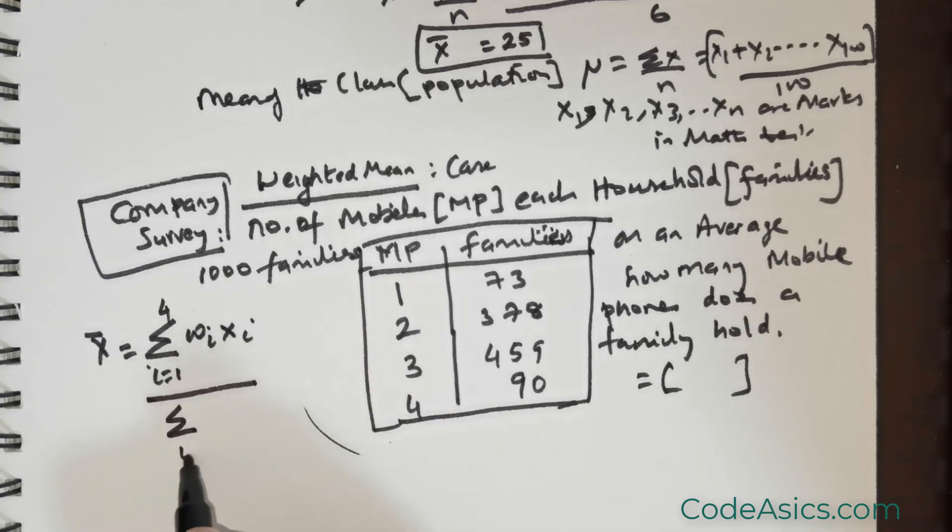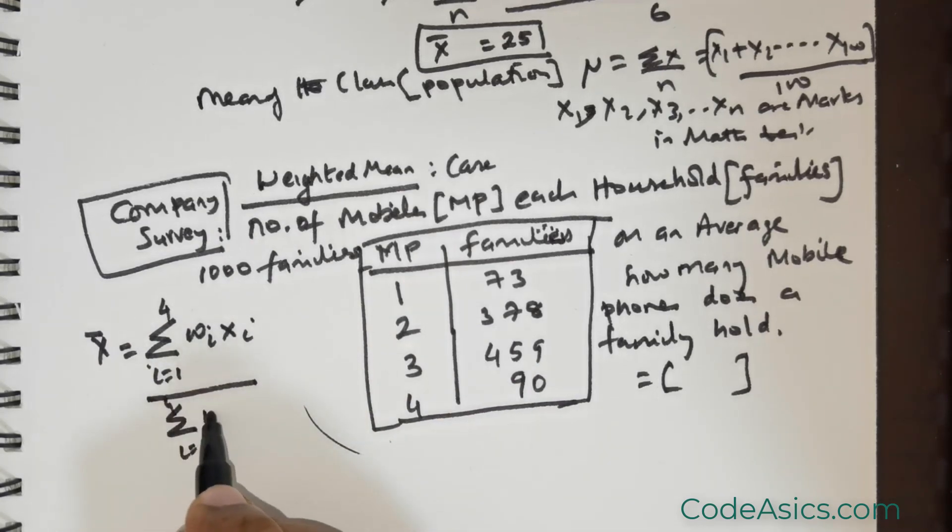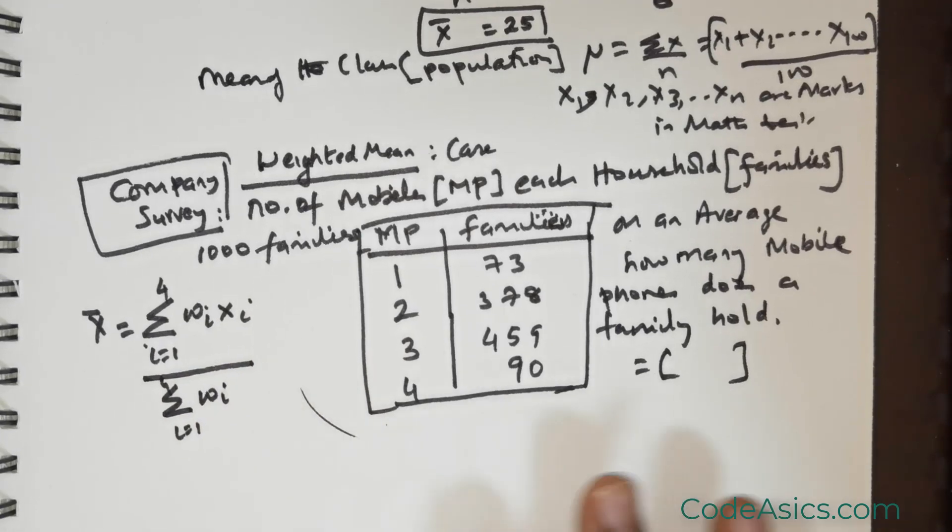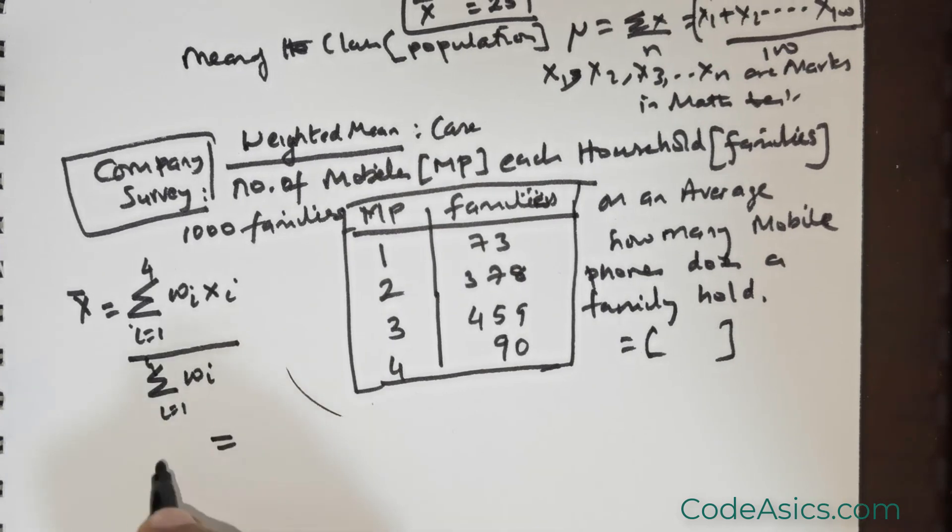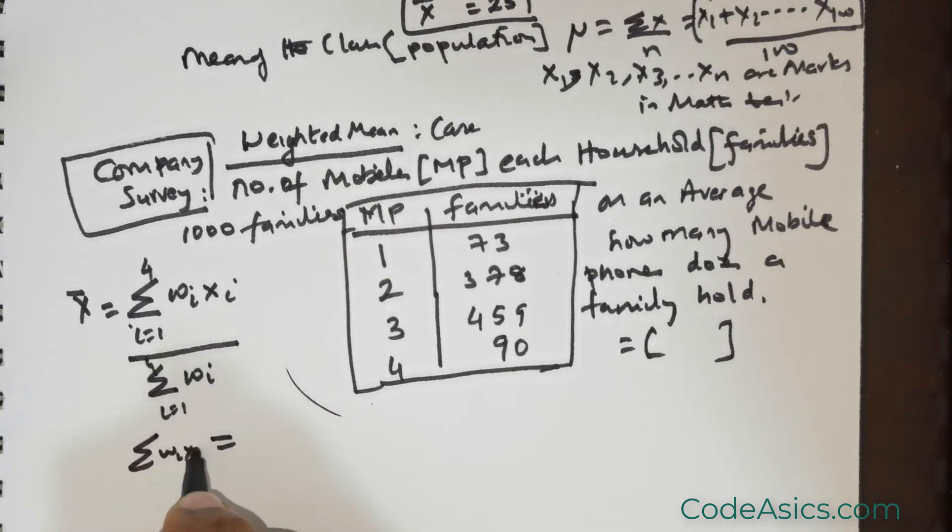That would be divided by sigma wi, where i equals 1 to 4. That is the all-important formula you need to know. Having got that, let me calculate sigma wi times xi.